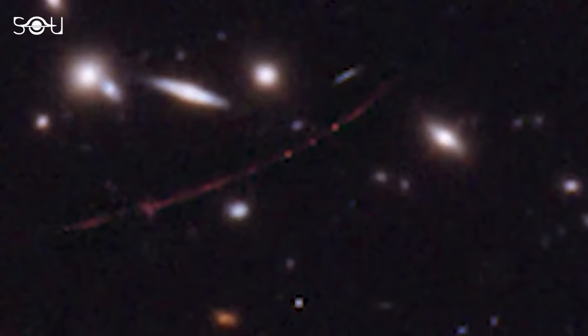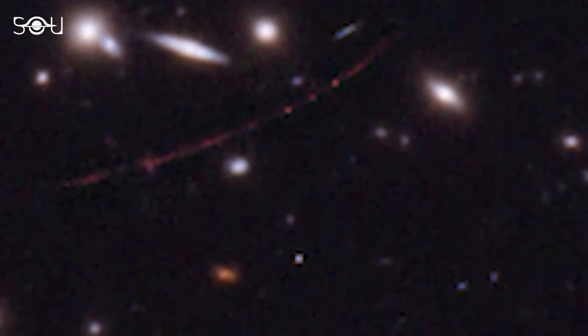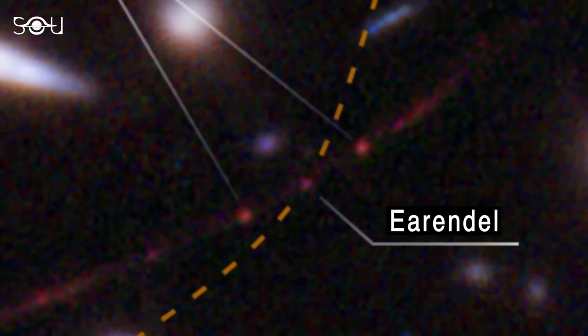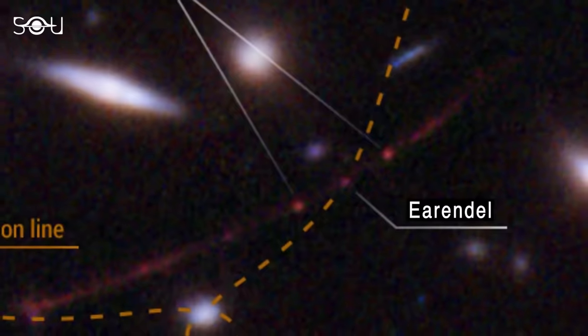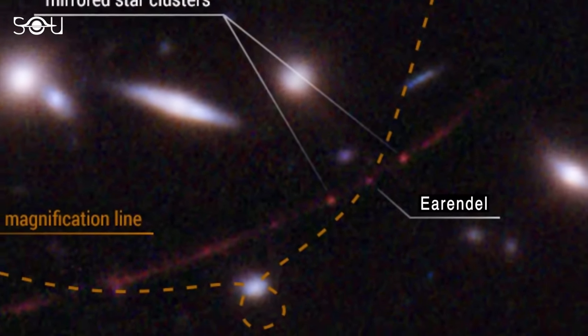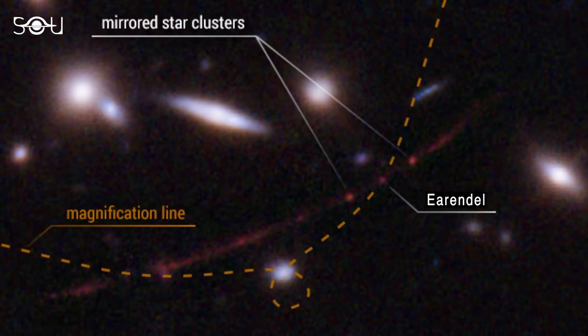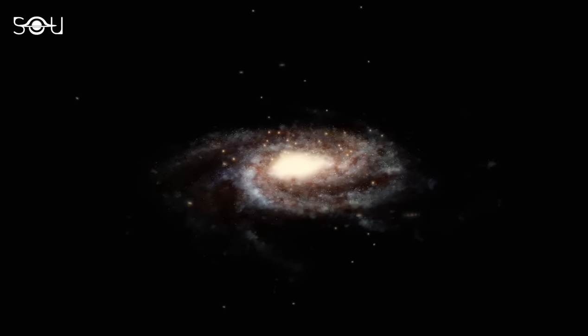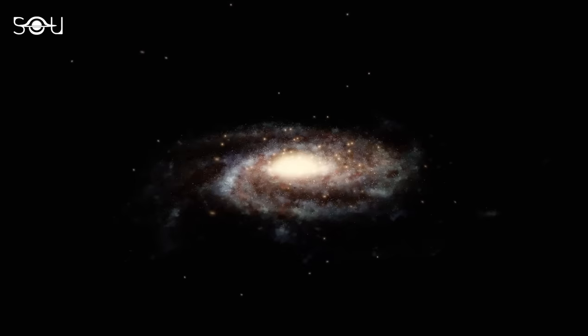The area where stars are forming looks stretched out, and it's thought to be less than five million years old. There are smaller dots on either side of Earendel, and there are two images of an older star cluster probably around 10 million years old. Astronomers determined this star cluster is gravitationally bound and likely to persist until today. This shows us how the globular clusters in our own Milky Way might have looked when they formed 13 billion years ago.